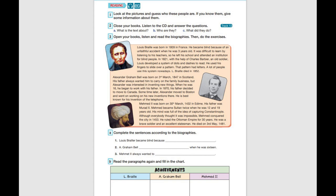Louis developed a system of dots and dashes to read. He used his fingers to slide over a pattern. That pattern had letters. A lot of people use this system nowadays. L. Braille died in 1852.